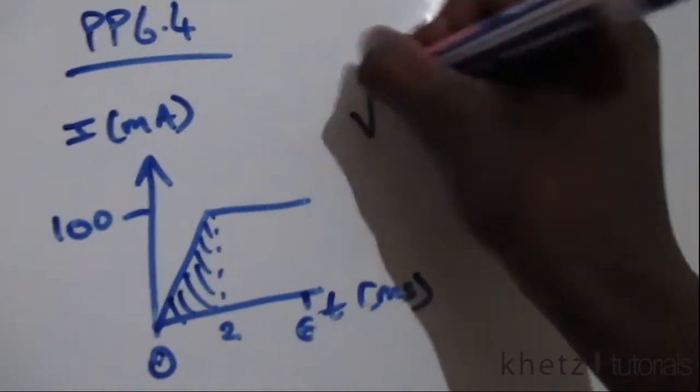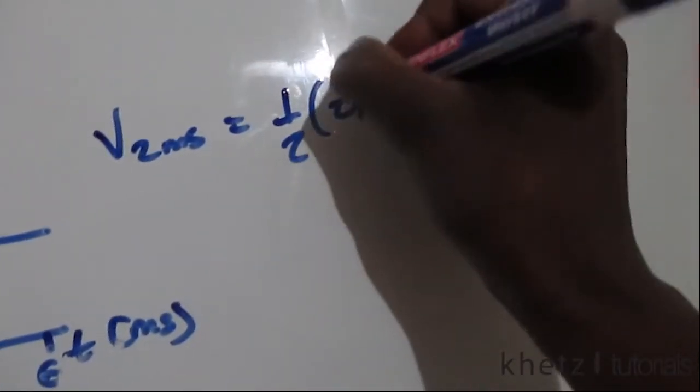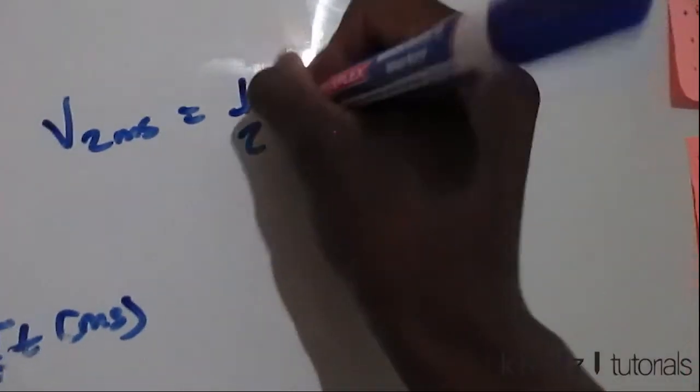Now the area of that part we're going to find. So voltage at two milliseconds equals the area of that triangle which we have there. That's going to be half base times height.